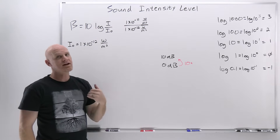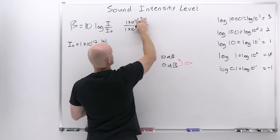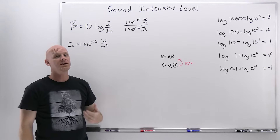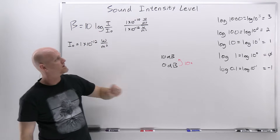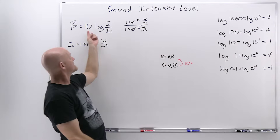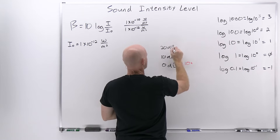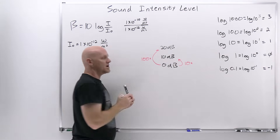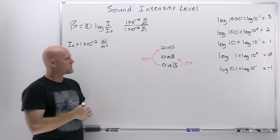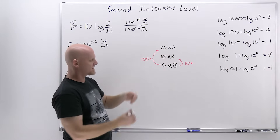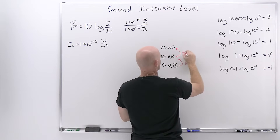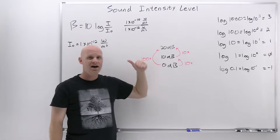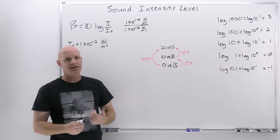Let's make the intensity 100 times greater than the threshold — that's 1×10⁻¹⁰ W/m². The ratio I over I-naught is now 100. The log of 100 is log of 10 squared, which gives us 2. Multiplying by 10 gives 20 decibels. So from 0 to 20 decibels is a factor of 100 times greater intensity. You can see how this works: 0 to 10 is 10 times, 0 to 20 is 100 times, so from 10 to 20 must also be 10 times greater. Every 10 decibels on this scale represents a factor of 10 difference in intensity.